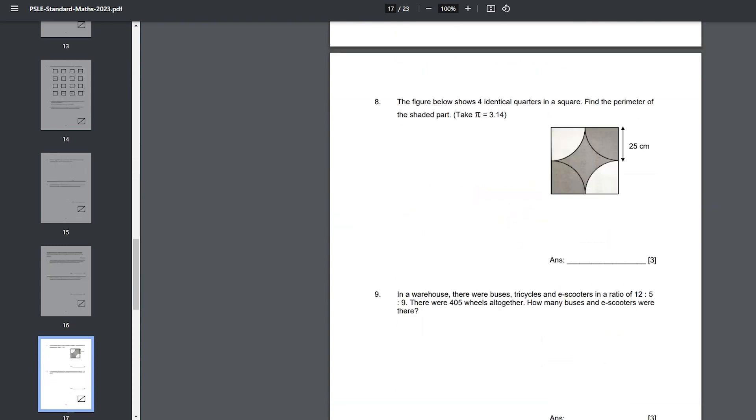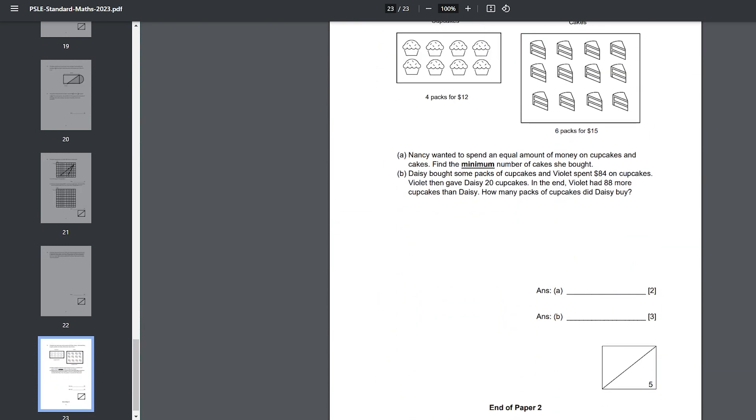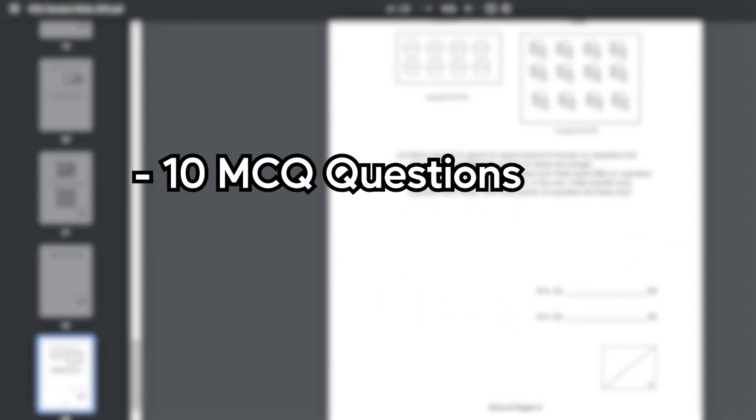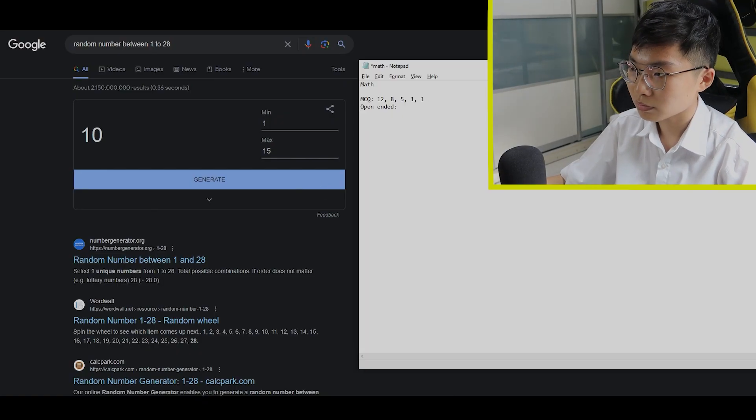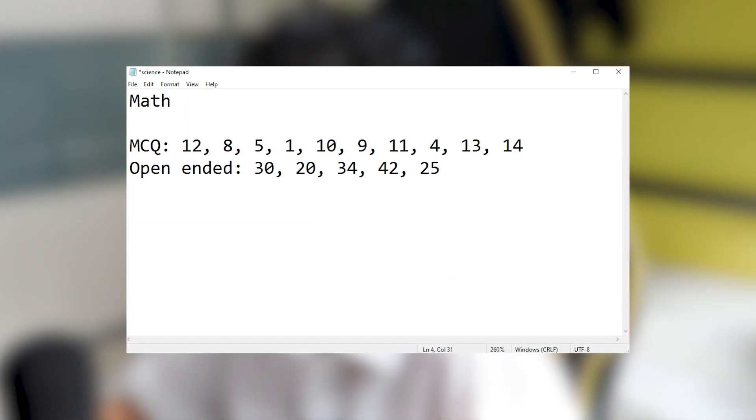As I mentioned in my previous video, if I were to do the full paper, this video would probably be a few hours long. So instead, I'll be doing 10 MCQ questions and 5 open-ended. I'll also be using Google to randomly choose the question numbers. So yeah. Okay, so these are the numbers that I got.